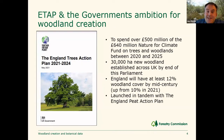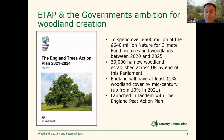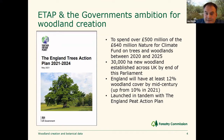Back in May, the government launched the England Trees Action Plan — a UK publication for the duration of this Parliament. It was launched in tandem with the England Peat Action Plan, and many of the actions are common and interoperable between the two policy documents. The government is committed to spending £500 million of the £640 million Nature for Climate Fund on trees and woodlands over a five-year period — effectively 30,000 hectares of new woodland to be established across the UK by the end of Parliament. There's a long-term vision of 12% of England being covered in woodland by the middle of this century, up from around 10.1% today.